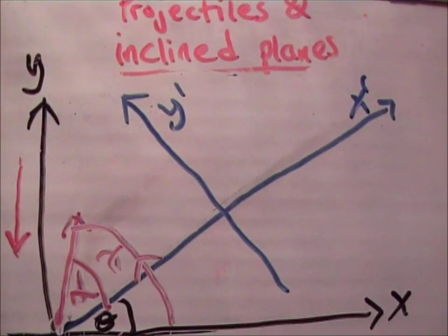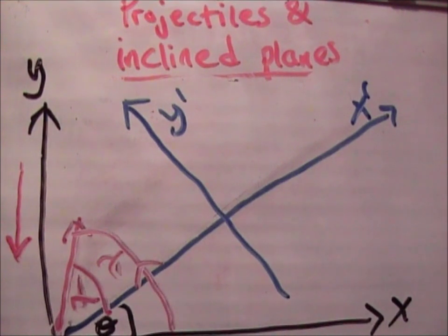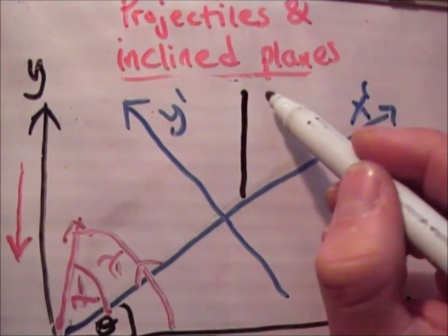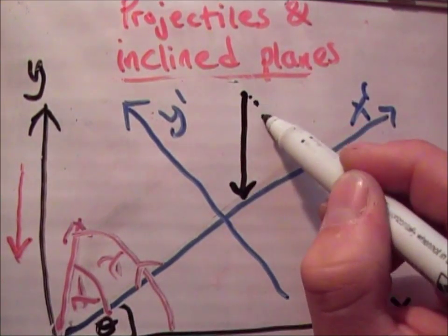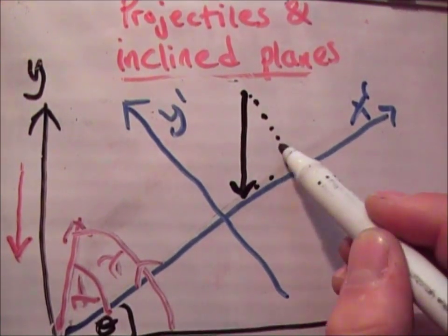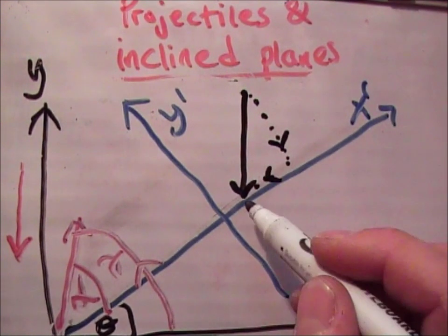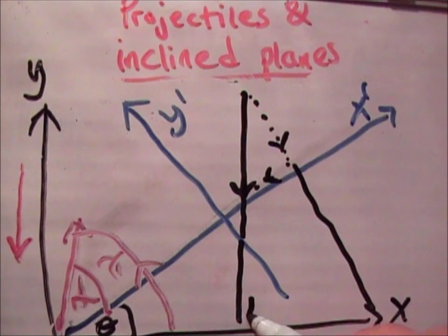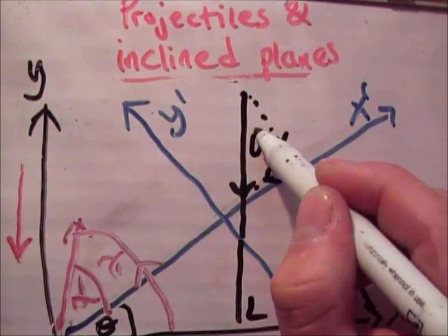And also if you look at gravity, gravity acts this direction. So if you resolve it to its component unit vectors and if you extend it down, you'll find that it bisects the plane here at an angle perpendicular. So therefore this angle here theta.